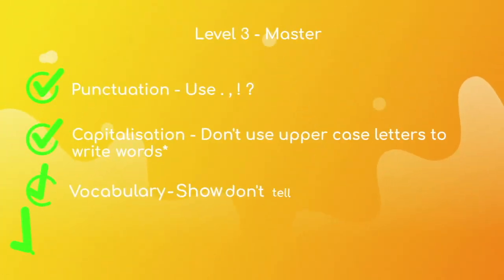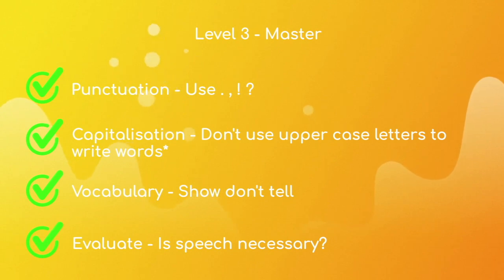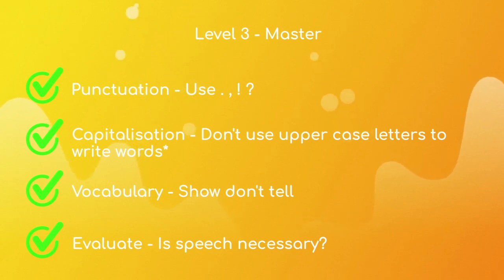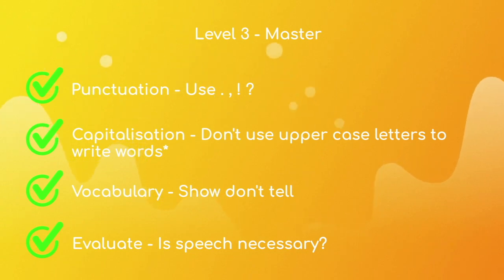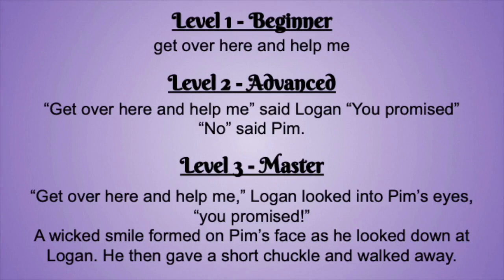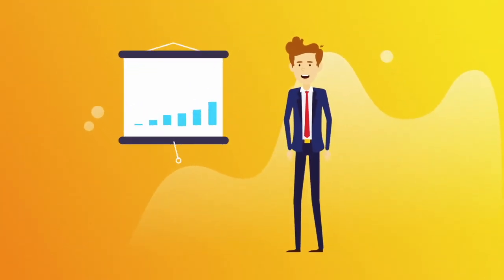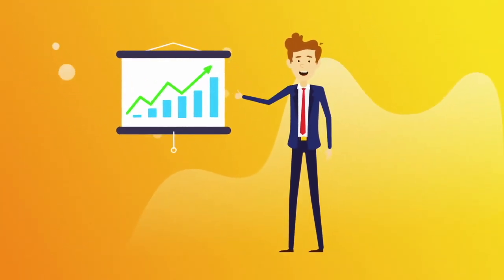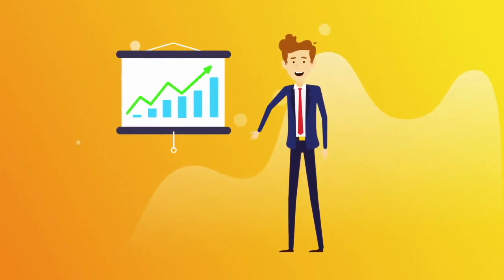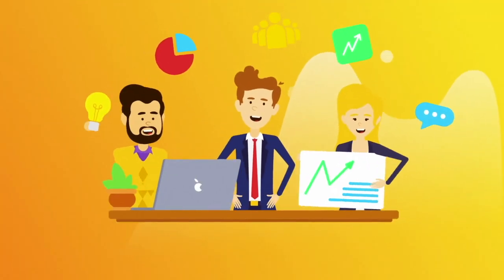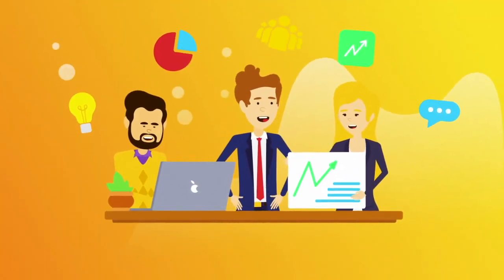To summarise the master level: use full stops, commas, exclamation points, and question marks correctly. Don't use uppercase letters to write entire words unless for a very specific reason. Show, don't tell. And evaluate speech by asking, is it necessary? Now that we have looked at all three levels of dialogue, we can see how a simple phrase like 'get over here and help me' can be changed and manipulated into quite a sophisticated piece of work. I wonder where you sit and what you need to do to improve as you make your way to becoming a master.